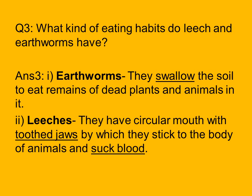On the other hand, leeches have a circular mouth with toothed jaws by which they stick to the body of animals and suck their blood. The toothed jaws help the leech stick to the body of the animal and suck its blood, which is how it feeds itself.